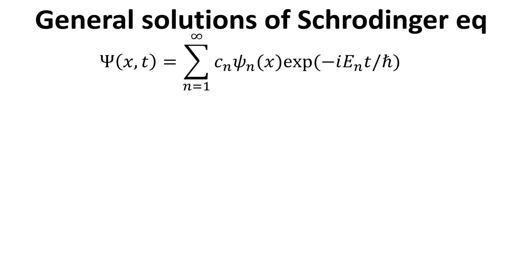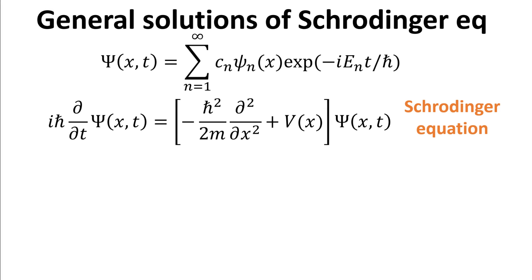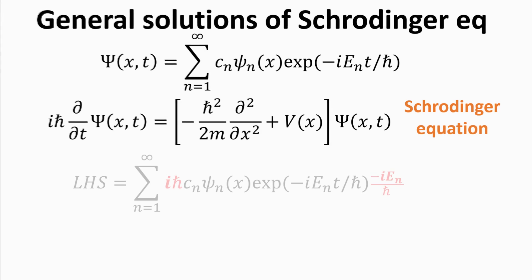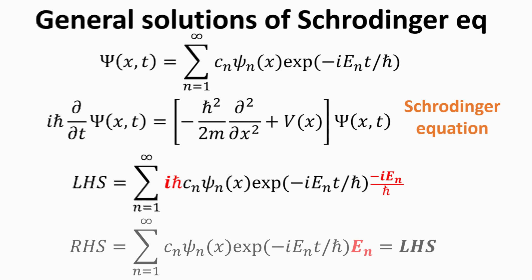We construct a general solution to the time-dependent Schrödinger equation, denoted by big psi, as a linear combination of all possible stationary states constructed from the eigensolutions in the previous slide. We can show that this general solution is indeed a solution to the time-dependent Schrödinger equation. Starting on the left-hand side, taking the time derivative simply incurs the factor minus i E n divided by h-bar. For the right-hand side, the Hamiltonian acting on the wave function can be replaced by its eigenvalue E n. Comparing these two expressions, we confirm that the left-hand side equals the right-hand side, so the general solution big psi is indeed a solution to the Schrödinger equation.